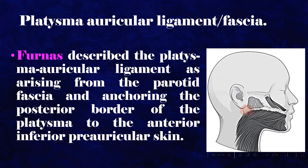Furness described the platysma auricular ligament as arising from the parotid fascia and anchoring the posterior border of the platysma to the anterior inferior preauricular skin.